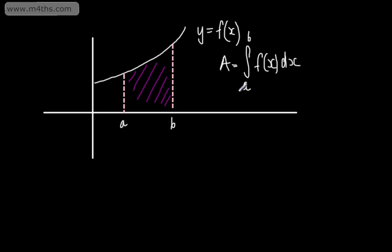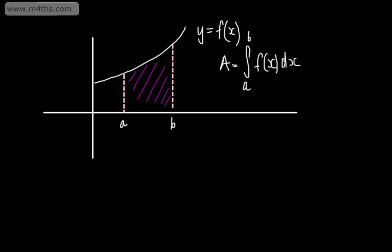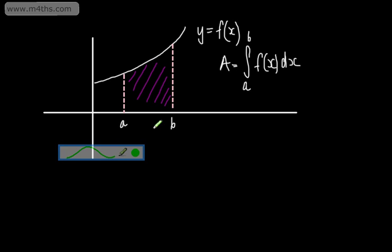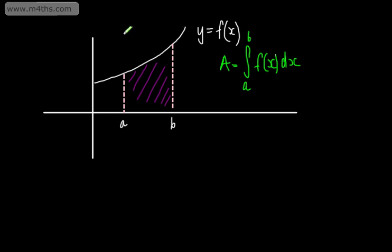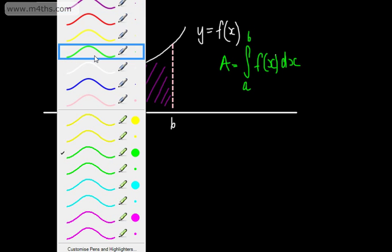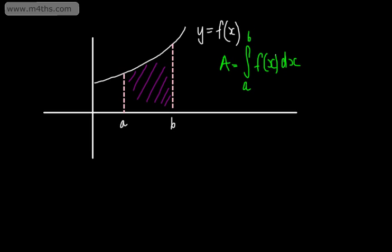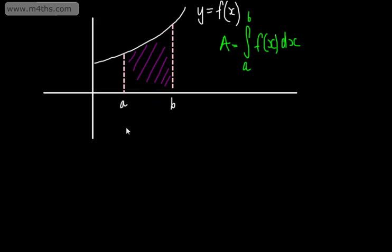We saw how to evaluate a definite integral in the last video, and that's all we're going to do in this video — we're simply using this to find our area. The area is equal to the integral from a to b of f of x dx. Often, drawing a sketch will help you with these problems, and what I want to do is start off with a confidence-boosting example. This isn't a proof, it's just an example of how we can see this in action.